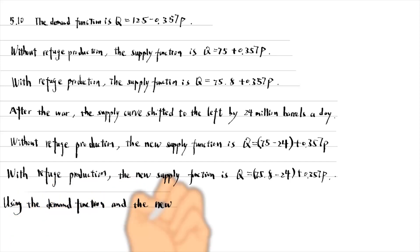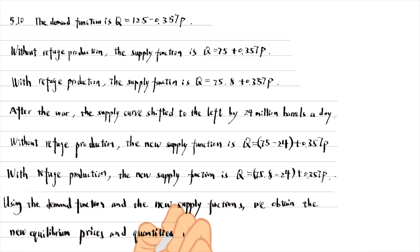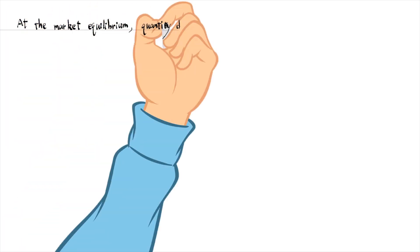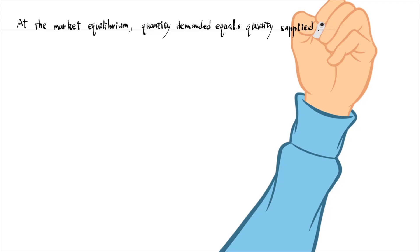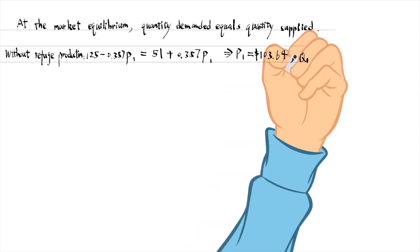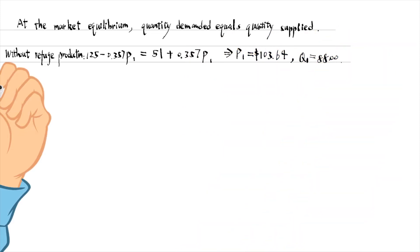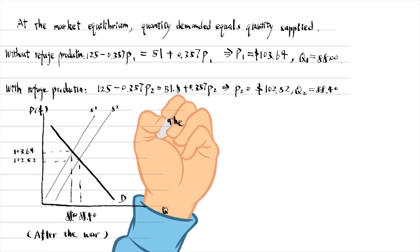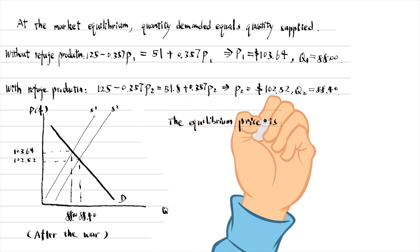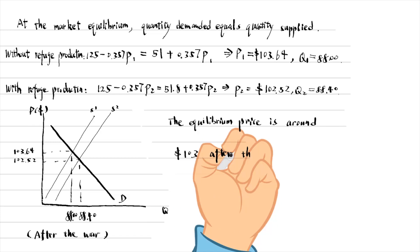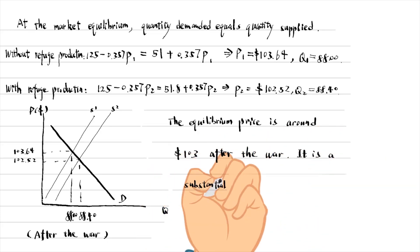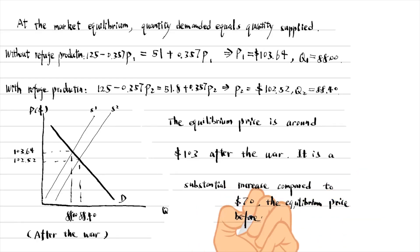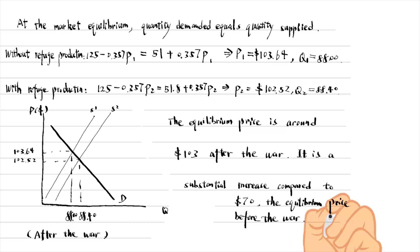Using the demand function and the new supply functions, we obtain the new equilibrium prices and quantities with and without the refuge production. At the market equilibrium, the quantity demanded equals the quantity supplied. Without the refuge production, we calculate the equilibrium price and quantity. We can draw a graph to show the equilibrium. The equilibrium price was around $103 after the war — a substantial increase compared to $70, the equilibrium price before the war. The difference between the prices with and without the refuge production is tiny.